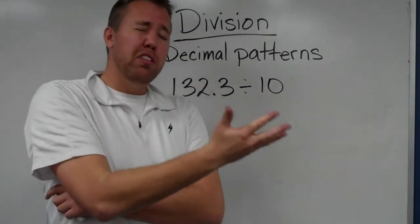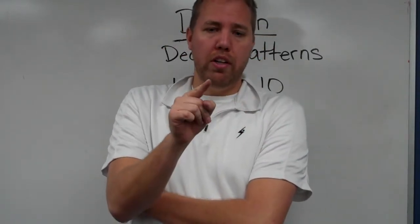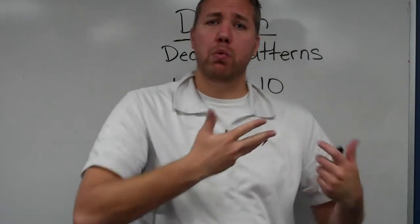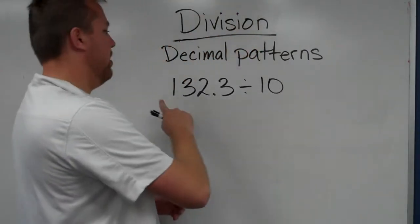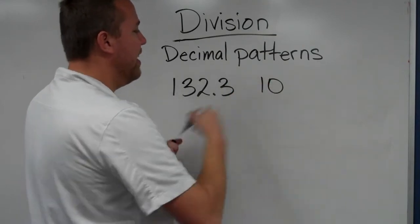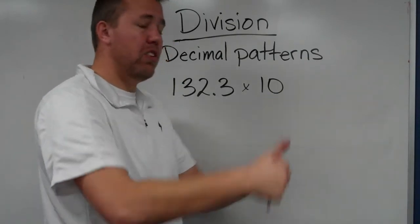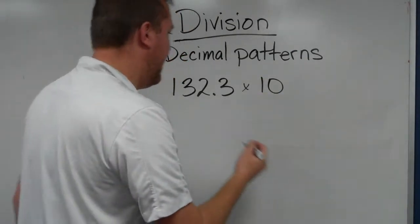When we multiply by ten and there was a decimal involved, we would move the decimal to the right because we want to make the number bigger. For example, if we had 132.3 and we times it by ten, we're multiplying by something bigger than one, so that number is going to get bigger naturally.